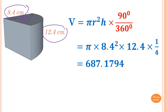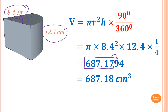To round the answer correct to two decimal places, we write up to 0.17. The number after 17 is 9, so we add 1 to 17, which gives me 687.18 cubic centimeters.